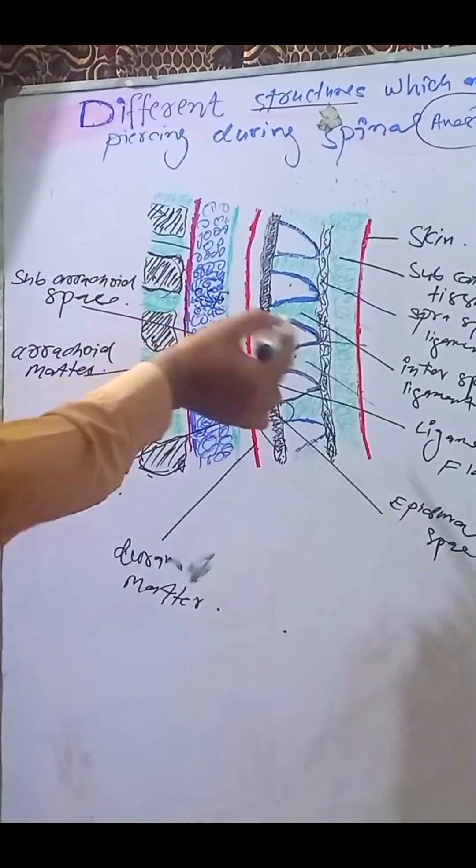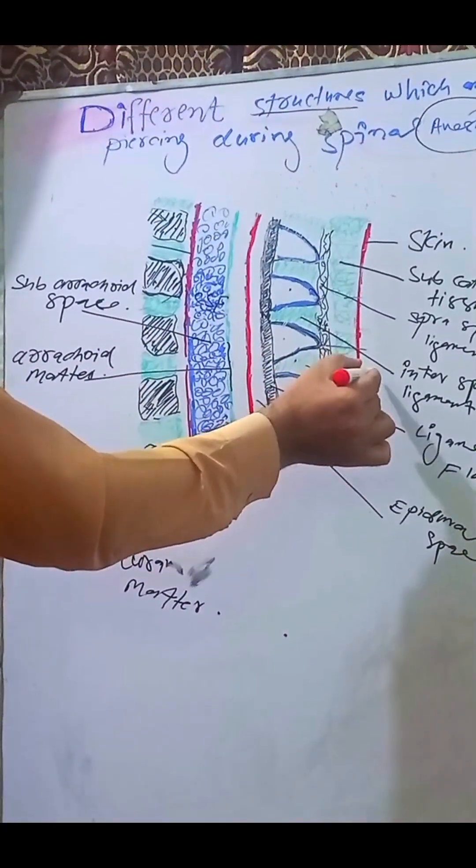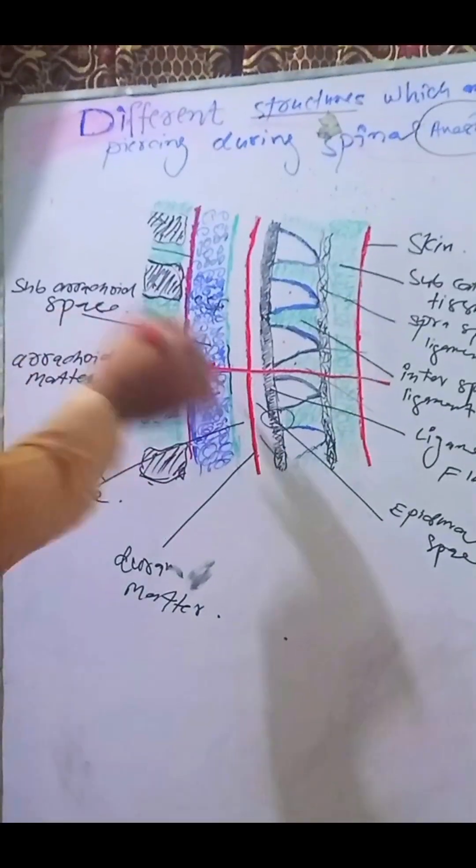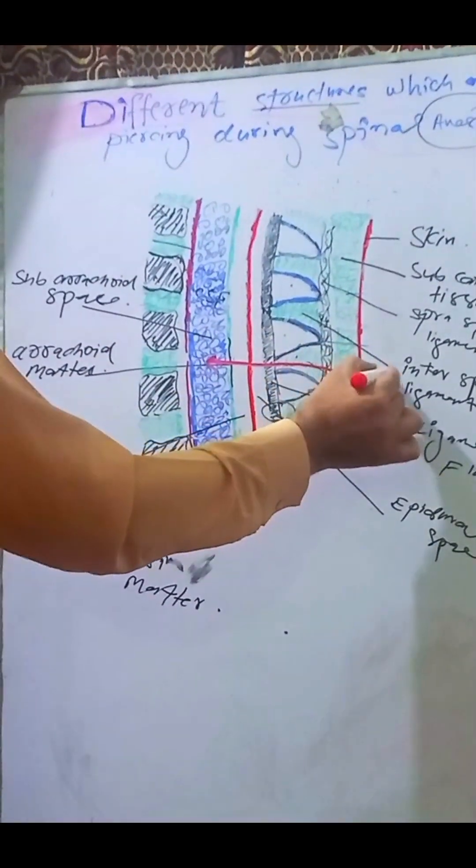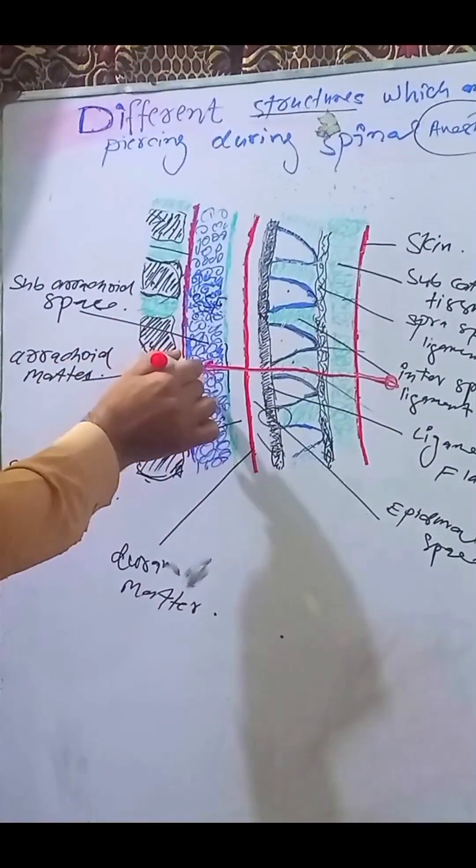We enter the spinal needle, I am going to draw with red color, which crosses all these layers and enters the subarachnoid space. Through the spinal needle we inject the local anesthetic to this space to achieve the desired block.